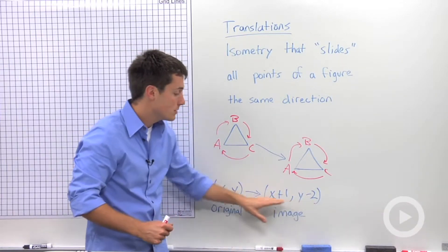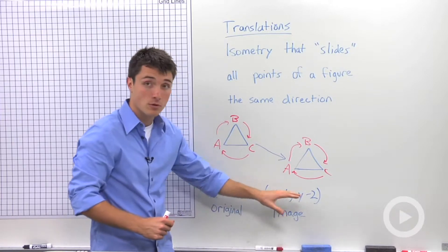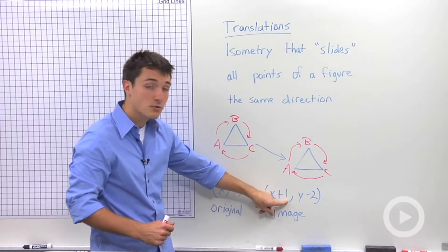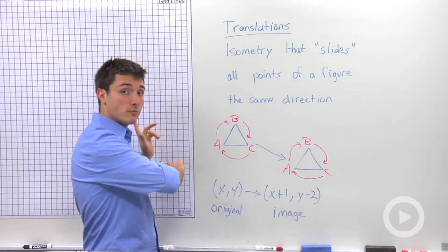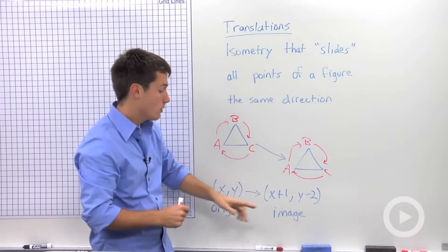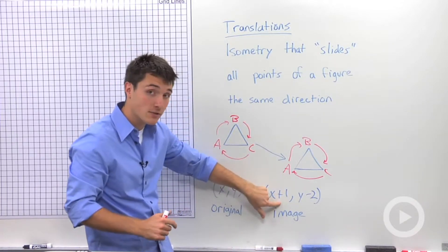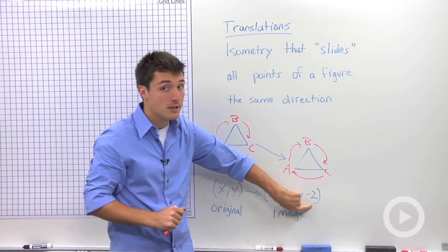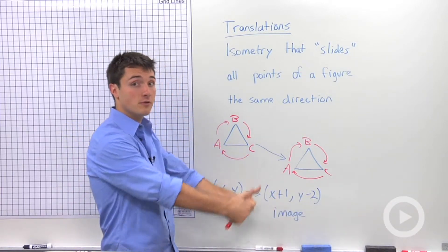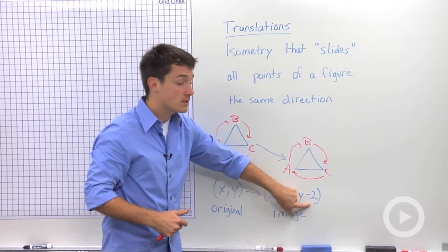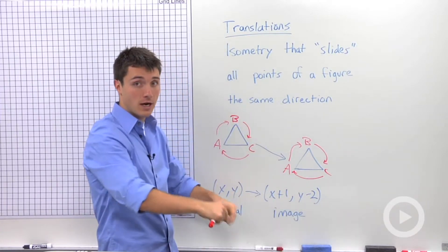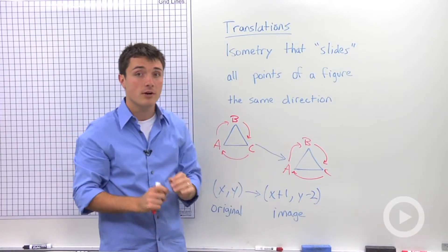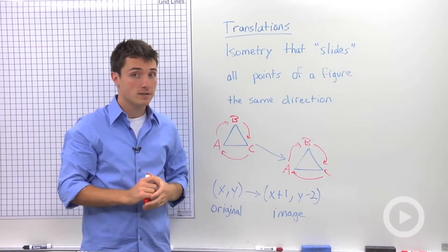You're going to use this rule to find which way you're going to translate. When you're adding to an X, you're going to be shifting your figure to the right. When you're subtracting from X, you're going to shift your figure to the left. When Y is being added to, you're going to shift your figure up. And when Y is being subtracted, it'll shift your figure down. Keep that in mind when you have problems asking you to translate an image.